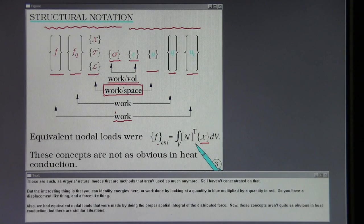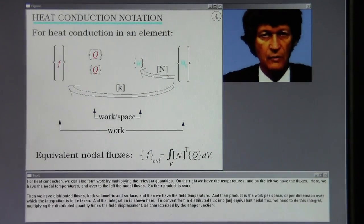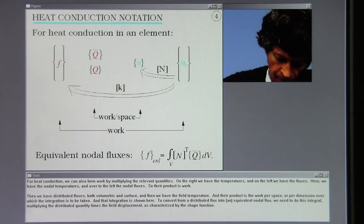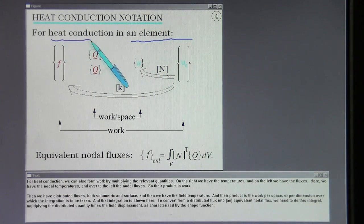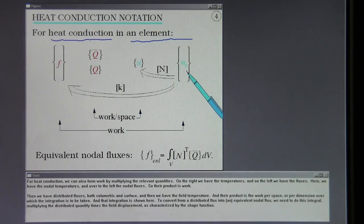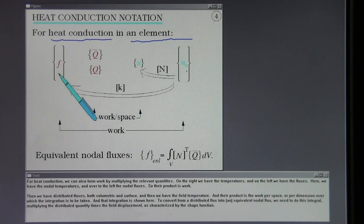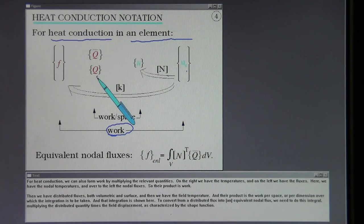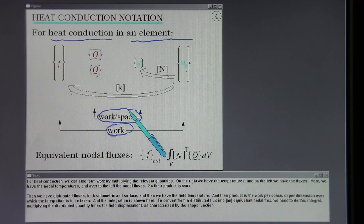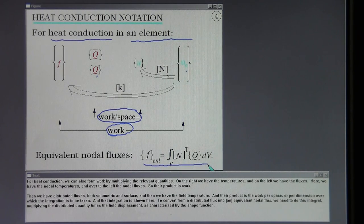These concepts aren't quite as obvious in heat conduction, but there are similar situations. For heat conduction, we can also form work by multiplying the relevant quantities. On the right we have the temperatures, on the left we have the fluxes - nodal temperatures and nodal fluxes, so their product is work. Then we have distributed fluxes, both volumetric and surface, and the field temperature. Their product is work per space or per dimension. To convert from a distributed flux into an equivalent nodal flux, we need to do this integral, multiplying the distributed quantity times the field displacement as characterized by the shape function.